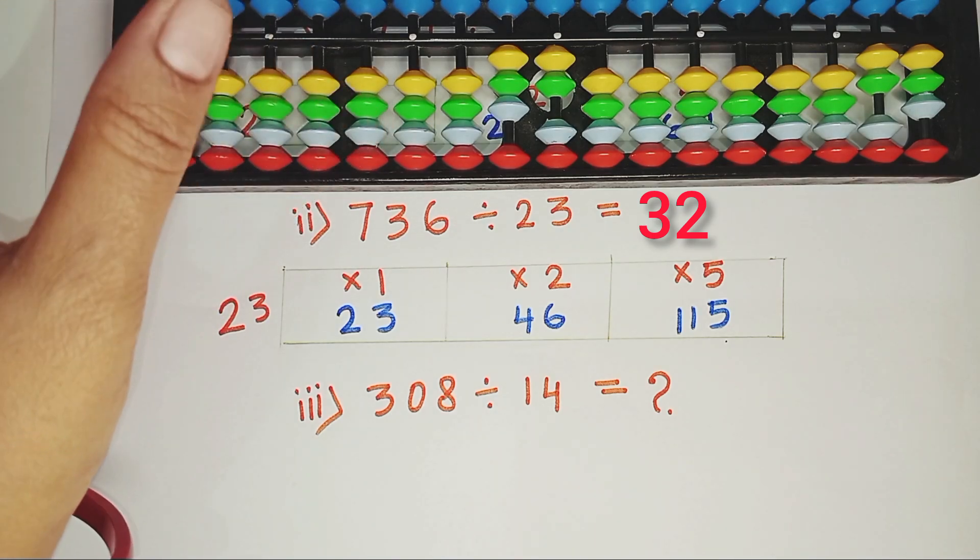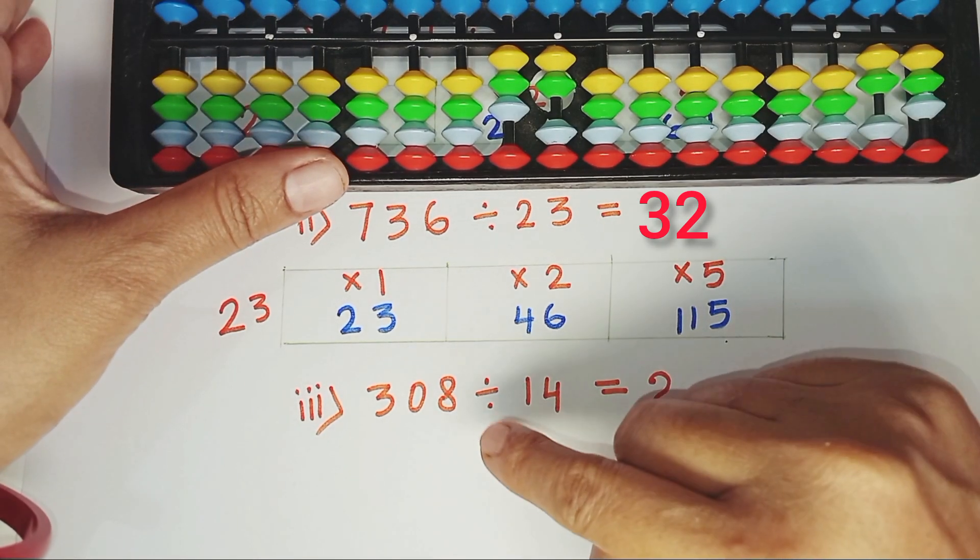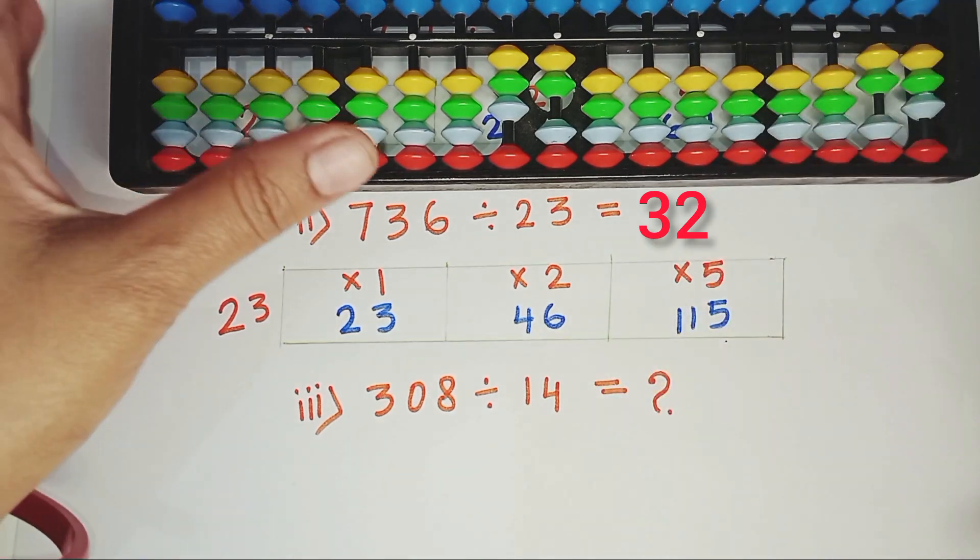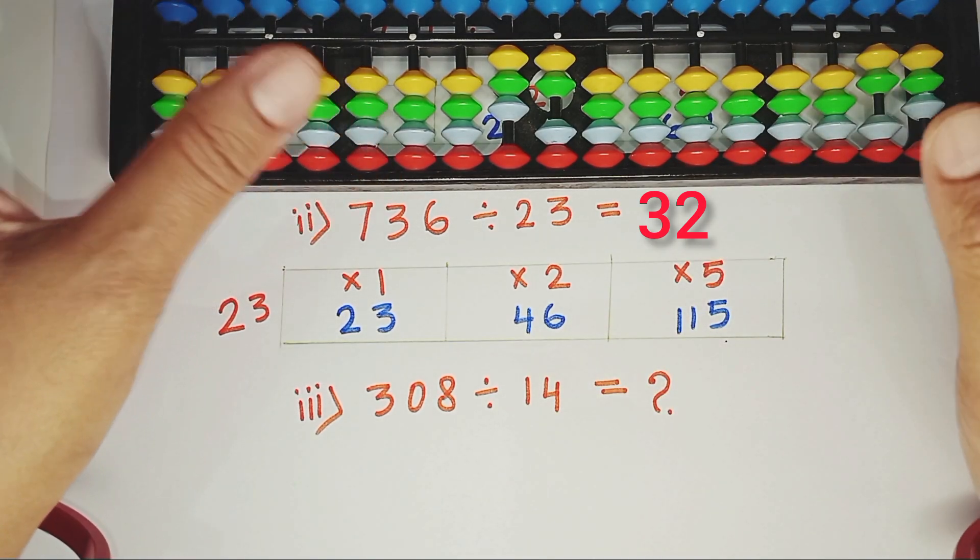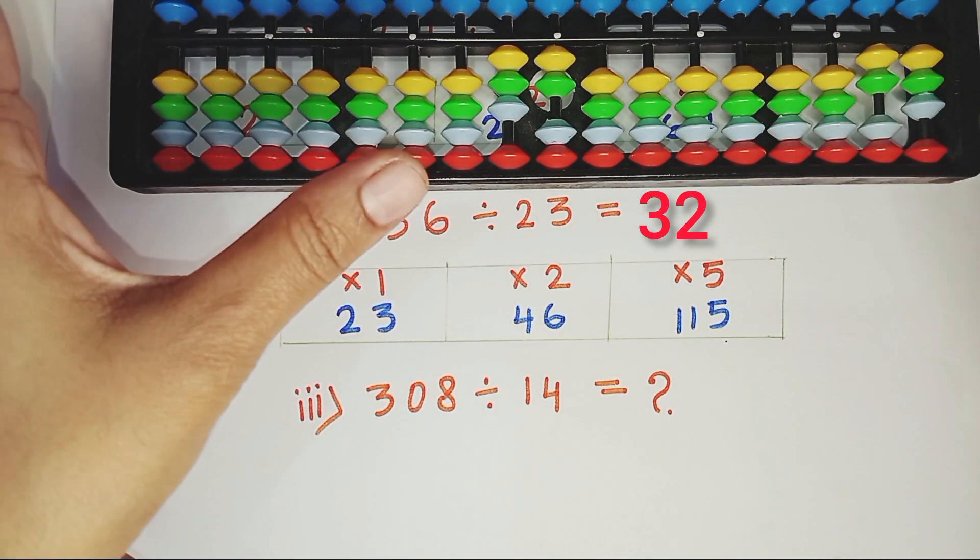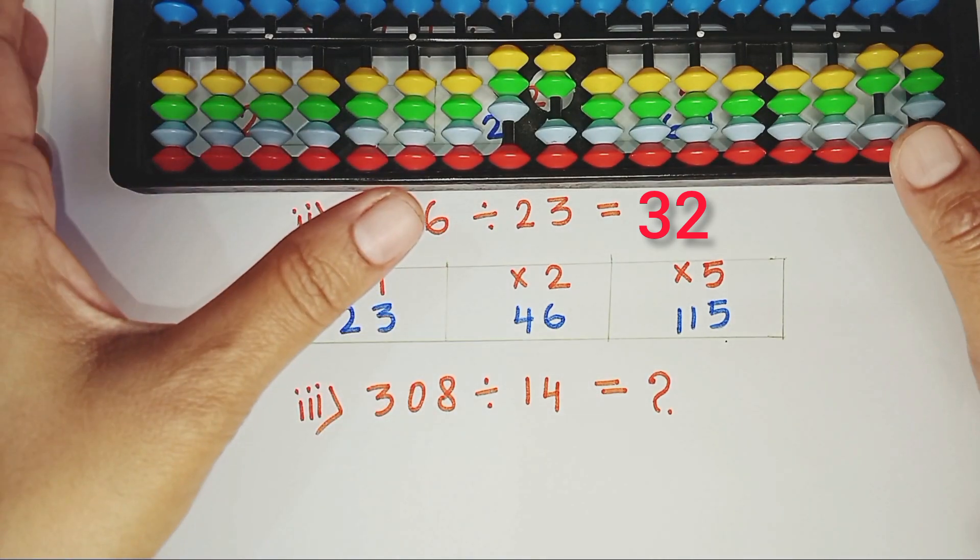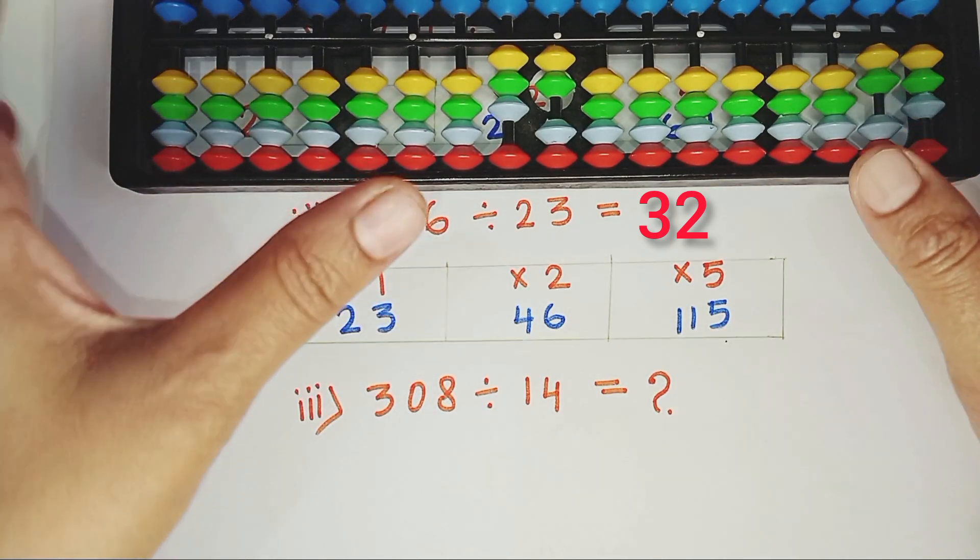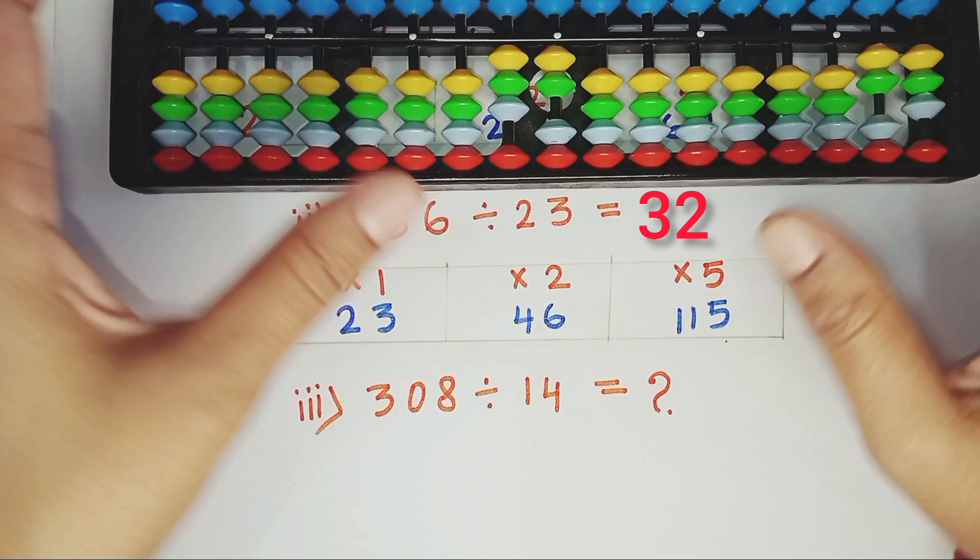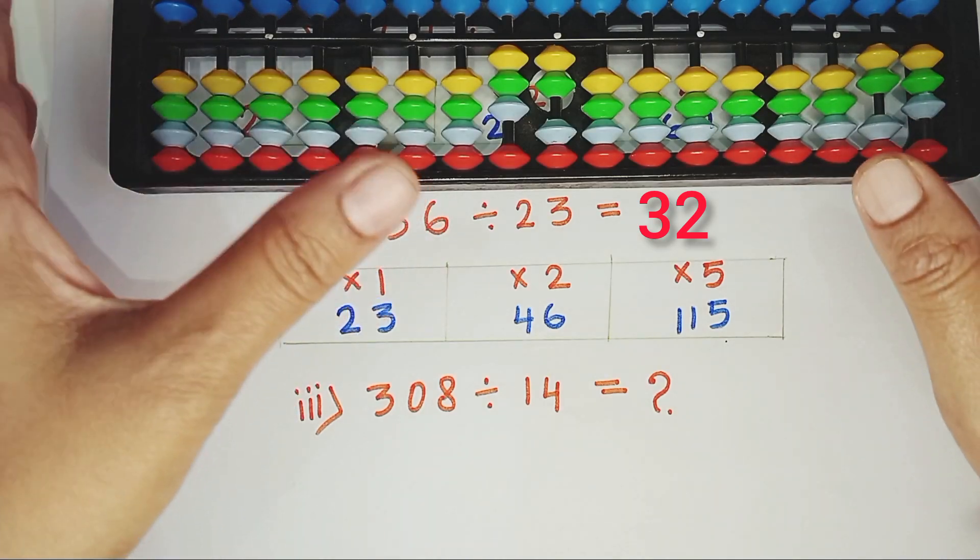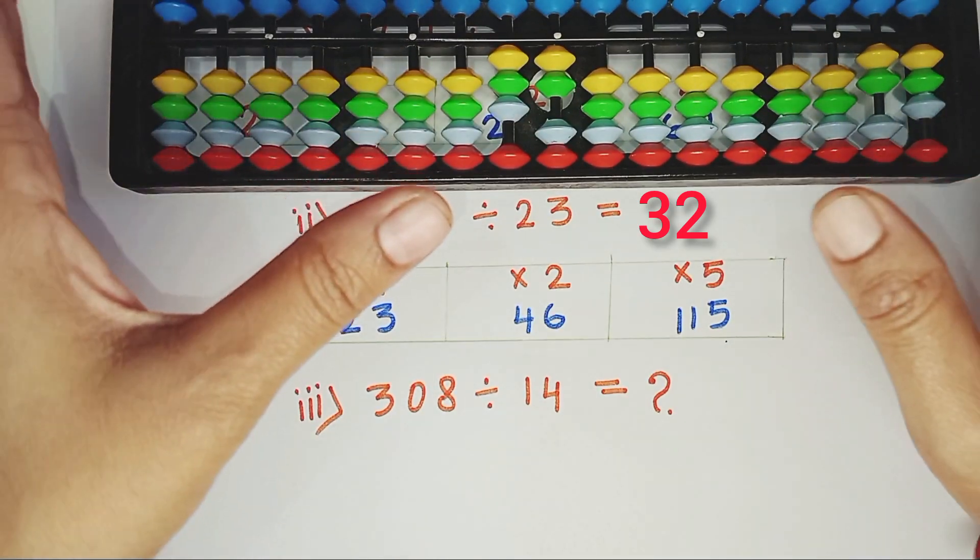Now, it's your turn. Solve the division: 308 divided by 14 with abacus. And let us know in the comments. And if you found this lesson helpful, don't forget to like, subscribe and hit the bell icon, so that you never miss a new lesson. See you in the next tutorial. Happy learning.